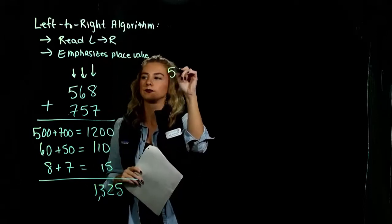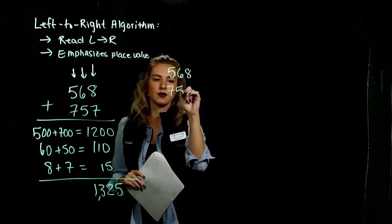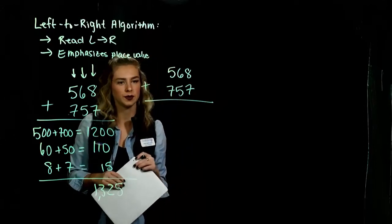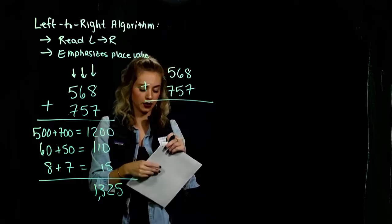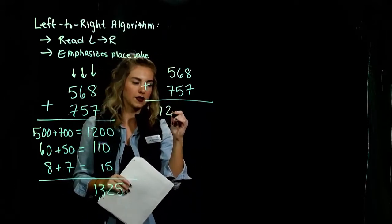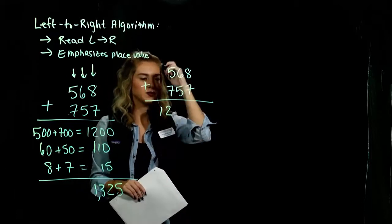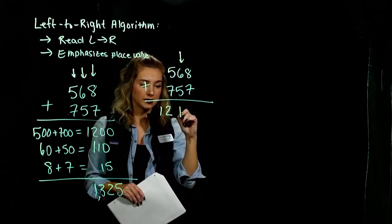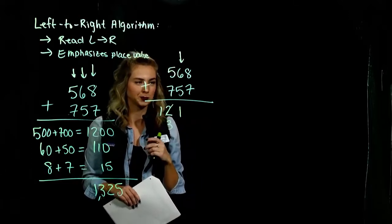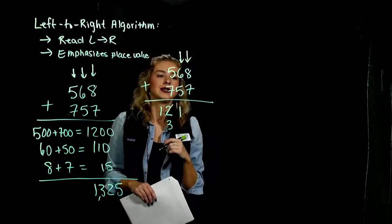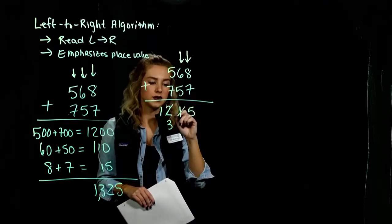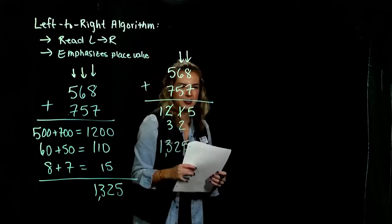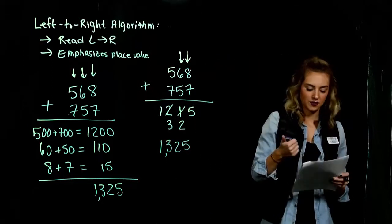Another way to handle 568 and 757 is all on one line — condensing it together. Moving left to right: 5 and 7 gives us 12, written below in the same place value. Moving to the tens: 6 and 5 gives us 11, same place value, but we carry to the next column. Then 7 and 8 gives us 15 — 5 units and we increase the tens by 1. So we get 1,325.